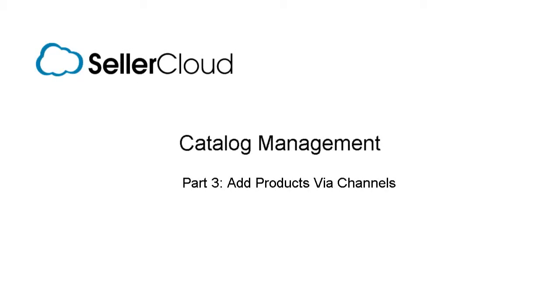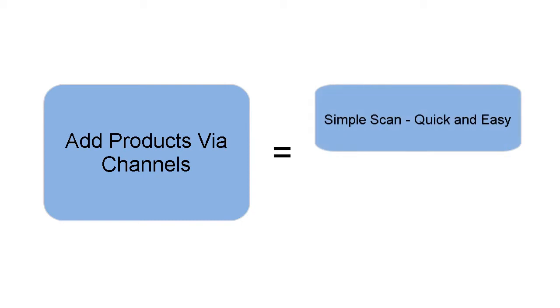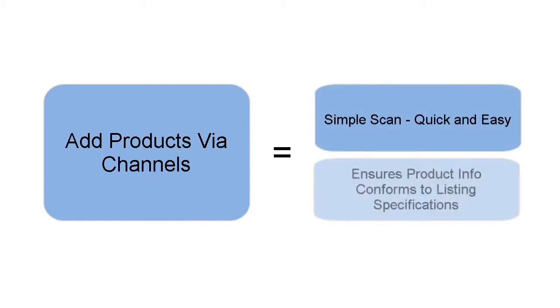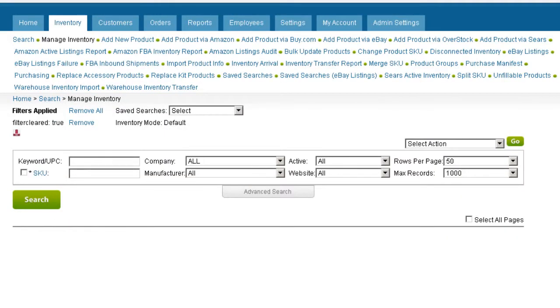In this tutorial, we'll look at adding products to your catalog directly via channels, an amazing yet easy to use tool. This feature not only adds products to your inventory with a simple scan, it also ensures that the product information conforms to the rigid and varying listing specifications of multiple channels. We'll demonstrate how this feature works by using the Add Product via Amazon feature.